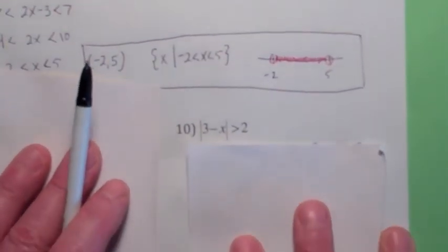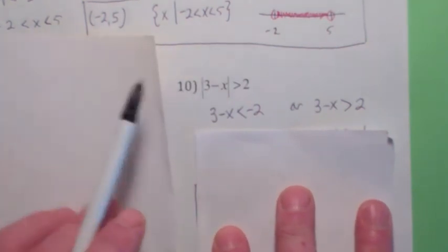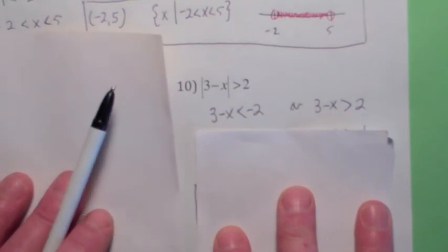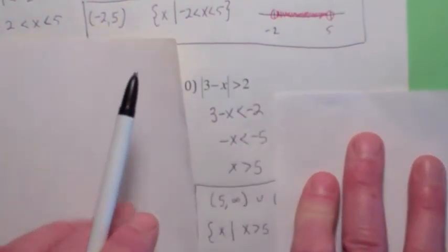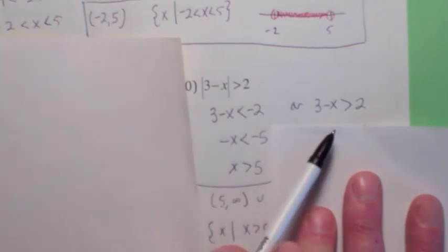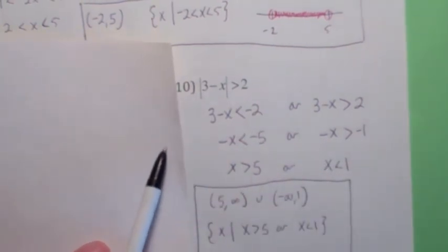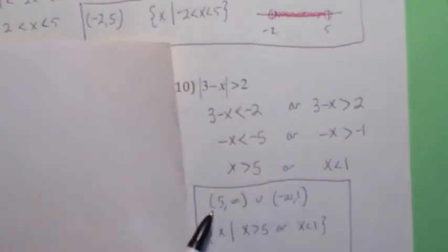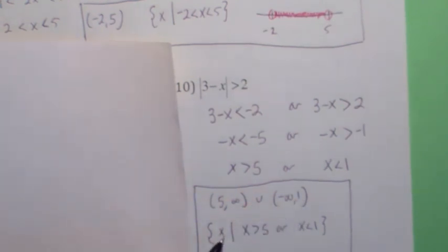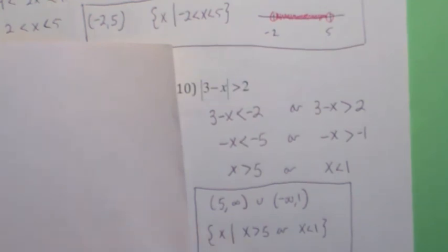Last one — how would you solve the absolute value of 3 minus x is greater than 2? Remember, since there's a greater than sign, you've got to break it up into two cases. Either 3 minus x is less than negative 2 or it's greater than 2. On the first case, when you subtract 3 from both sides and multiply by negative 1, you get this. On the other case, when you subtract 3 from both sides and multiply by negative 1, you get this. So the solution is x is greater than 5 or less than 1. In interval notation: open on 5 to infinity, union negative infinity to 1, open on both. Set of all x such that x is greater than 5 or x is less than 1. On the number line it would be everything to the left of 1 or everything to the right of 5, open on both.